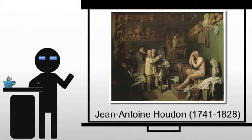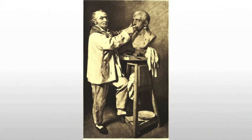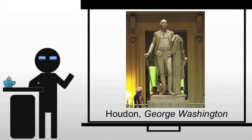Neoclassicism will also influence sculpture in the United States, and we have one of the leading neoclassical sculptors of the period, who is going to be Houdon — a French sculptor working in the United States. He is known for his portraiture specifically, which is why he sculpted this George Washington.